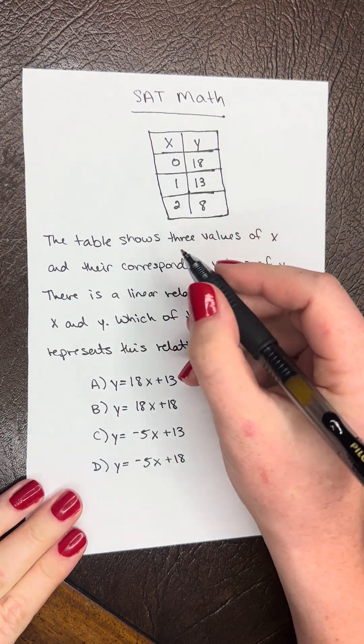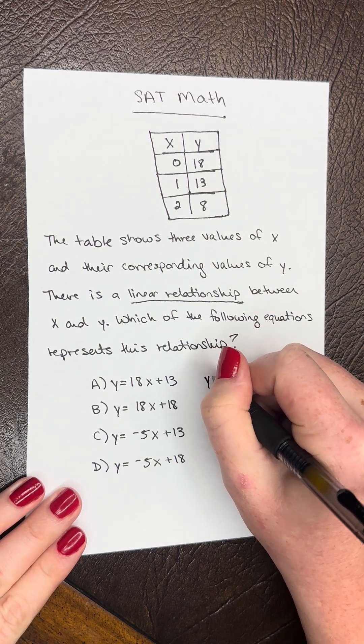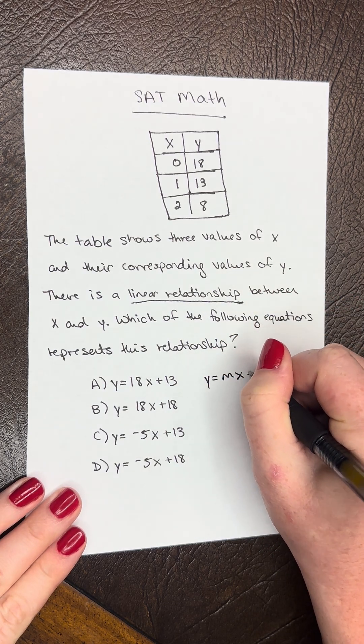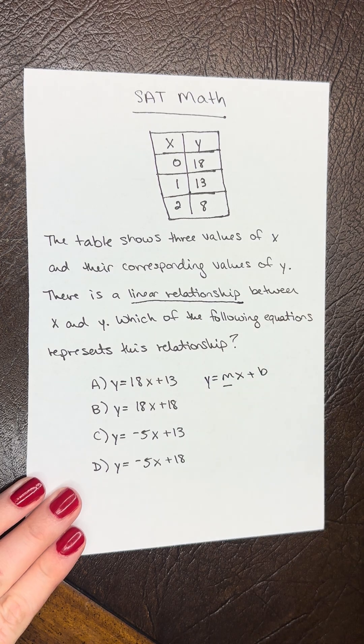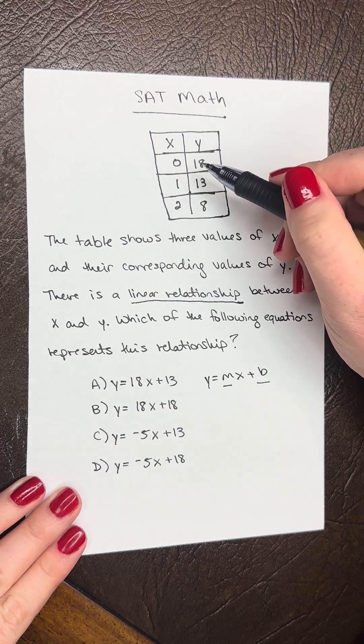So they tell us there's a linear relationship. So we know the equation is in the form of y equals mx plus b, where m is our slope and b is going to be our y-intercept. So first let's think about our b term, our y-intercept.